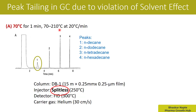Now let us look at peak number one, which belongs to N-decane. You can easily see that it is not a proper peak — it is completely distorted, having a lot of tailing.